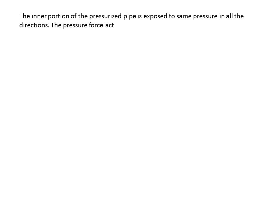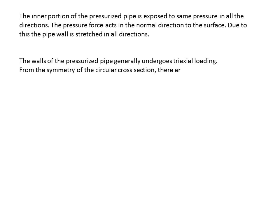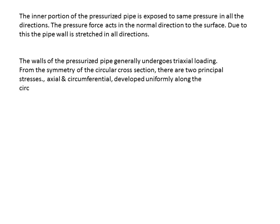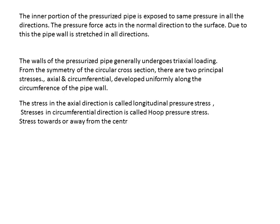The inner portion of the pressurized pipe is exposed to the same pressure in all directions. The pressure force acts normal to the surface, causing the pipe wall to stretch in all directions. The walls undergo tri-axial loading. From the symmetry of the circular cross section, there are two principal stresses — axial and circumferential — developed uniformly along the circumference. The axial direction stress is called longitudinal pressure stress, and stress in the circumferential direction is called hoop stress.